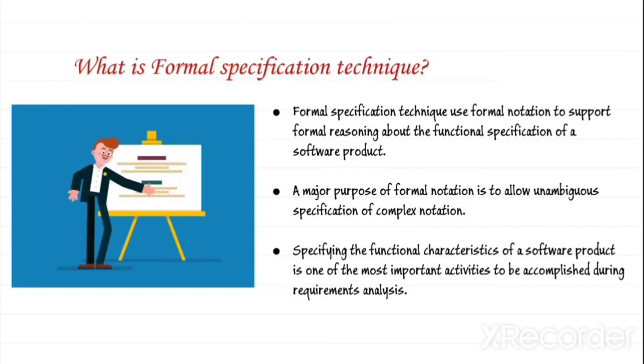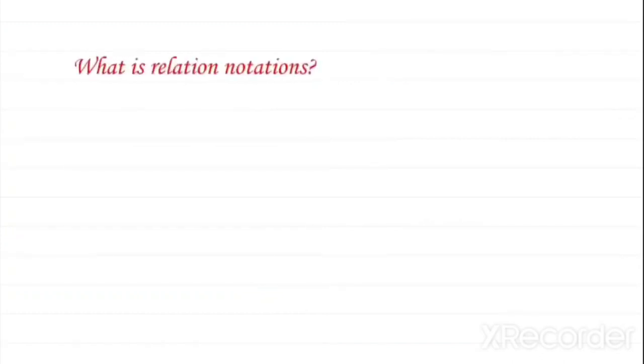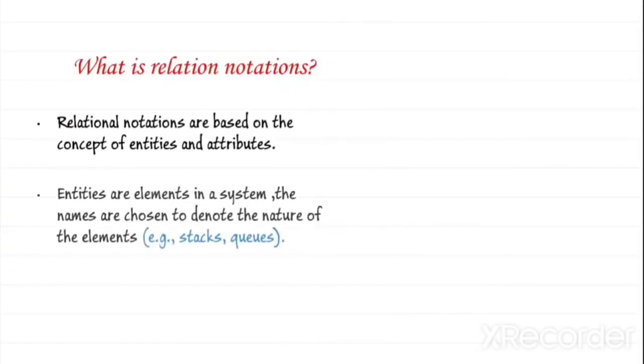Specifying the functional characteristics of a software product is one of the most important activities to be accomplished during requirement analysis. Here we use both relational and state-oriented notation to specify the functional characteristics of software. Let's see in detail about relational notations.